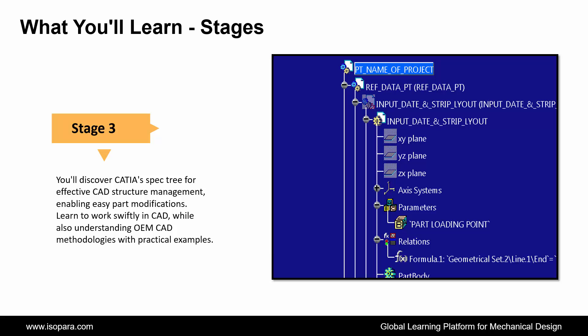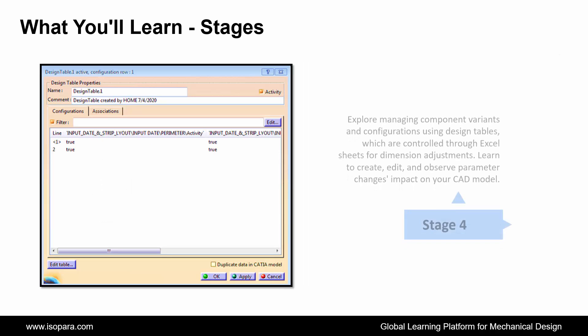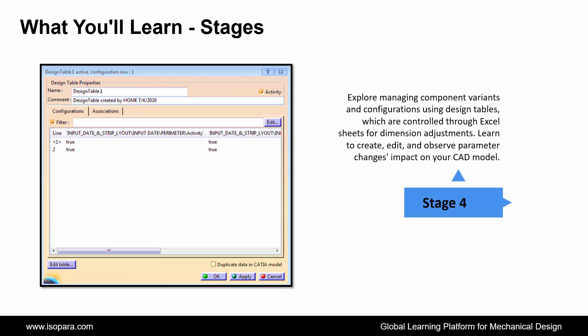Third, you'll discover the CATIA spec tree for effective CAD structure management, enabling easy part modifications. Learn to work swiftly in CAD while also understanding OEM CAD methodologies with practical examples. Fourth, explore managing component variants and configurations using design tables, which are controlled through Excel sheets for dimension adjustments. Learn to create, edit, and observe the impact of parameter changes on your CAD model.